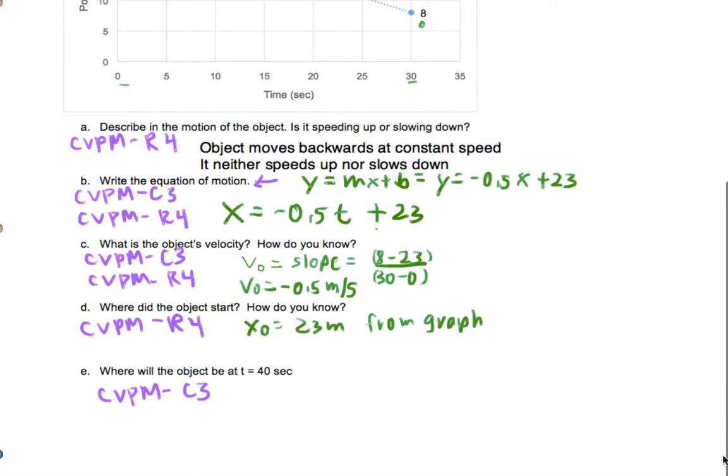Finally, where will the object be at 40 seconds? We're going to actually end up getting x is negative 0.5 times 40, because I'm plugging it into this formula right here. So I use this for part e, plus 23, and that's how I'm getting x at the end will end up being 3 meters at 40 seconds.